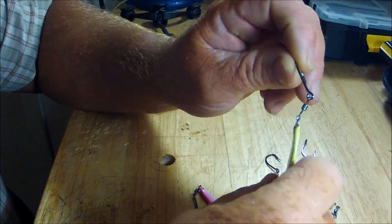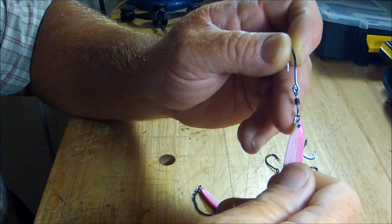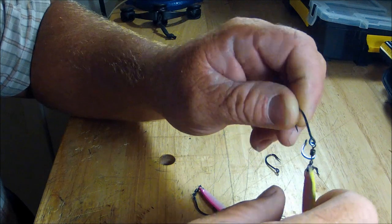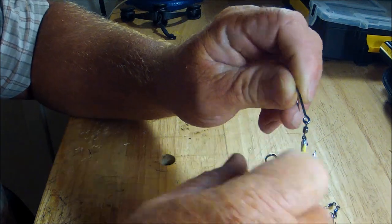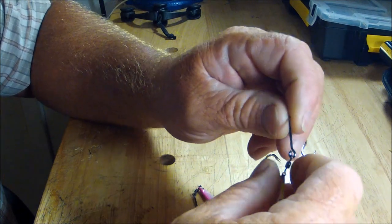And I crimp that on to that nice little fine wire right there on the tip by the eyeball. Well, I crimp that on. I open this hook eye and then I put that end of the swivel in there and I crimp everything back.